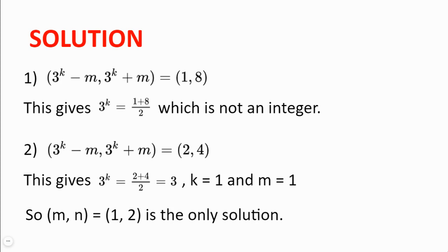If 3 to the power of k minus m is equal to 2, and 3 to the power of k plus m is equal to 4, we get 3 to the power of k equal to 2 plus 4 divided by 2, which is equal to 3, which gives k equal to 1, and m equal to 1. And so mn equal to 1, 2, because we need to multiply k by 2, is the only solution to the equation.